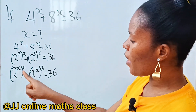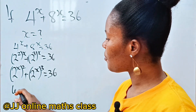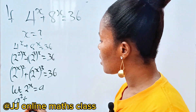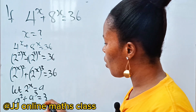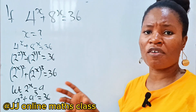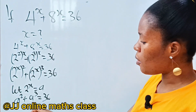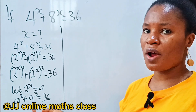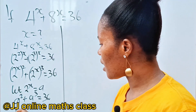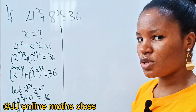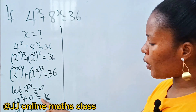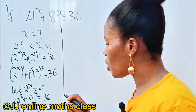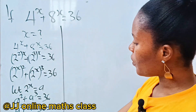We notice 2^x appears in both terms, so let a = 2^x. This gives us a² + a³ = 36. Rearranging, we get the cubic polynomial: a³ + a² - 36 = 0.